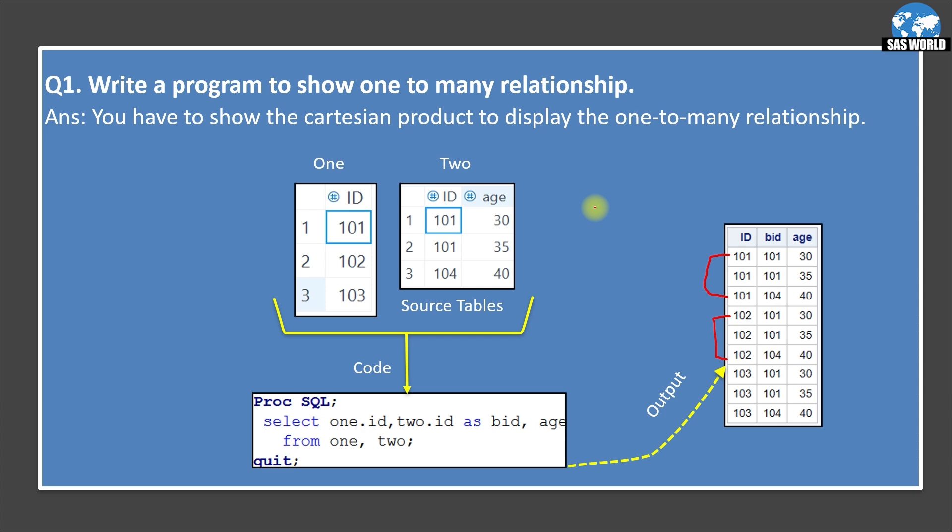However, when we use joins, there is optimization happens. That's why we do not see all the combinations. Only desired combinations we will see. So here you can see three rows and three rows here. So three into three is nine rows. So cartesian product size is nine rows. I hope you are clear about this question.